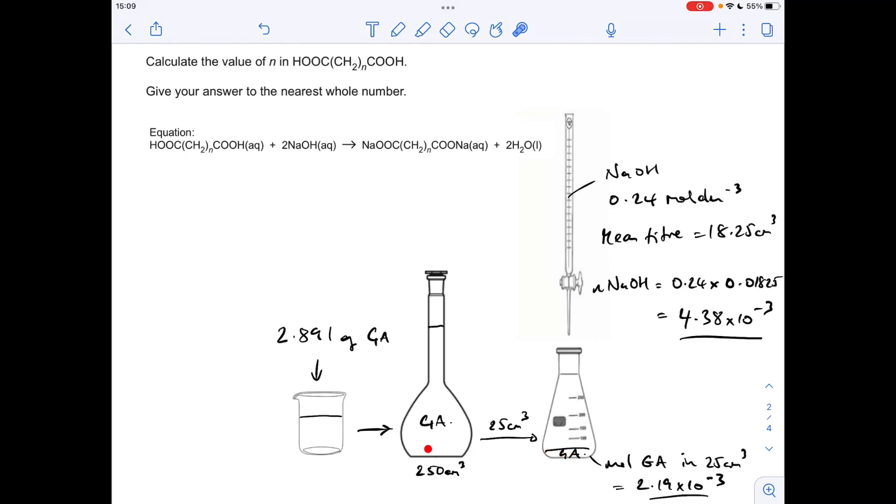So if we go back this way, we want to find out the moles of glutaric acid in the volumetric flask, 250 cm cubed, which is effectively the moles in that 2.891 grams. So how do the volumes compare? That's a tenth of that, so there'll be 10 times as many moles of acid in here, so we just take the power to 10 to the minus 2. So now we know that there's 2.19 times 10 to the minus 2 moles of glutaric acid in that mass, we can work out the MR. That's coming out at 132.